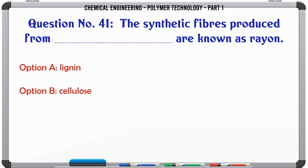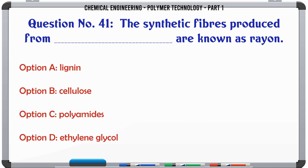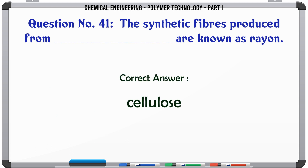The synthetic fibers produced from cellulose are known as rayon: A. Lignin, B. Cellulose, C. Polyamides, D. Ethylene glycol. The correct answer is Cellulose.